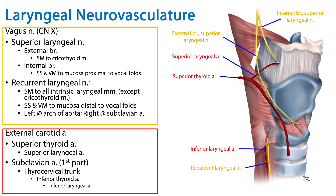We've discussed the role of the various branches of the vagus nerve — both the superior laryngeal nerve and its external and internal branches, as well as the recurrent laryngeal nerve — to the larynx, covering somatic motor, somatic sensory, and visceral motor functions. Thank you very much for your time.